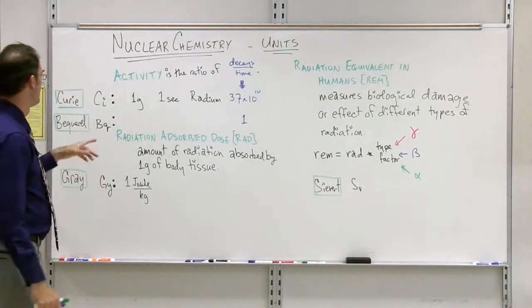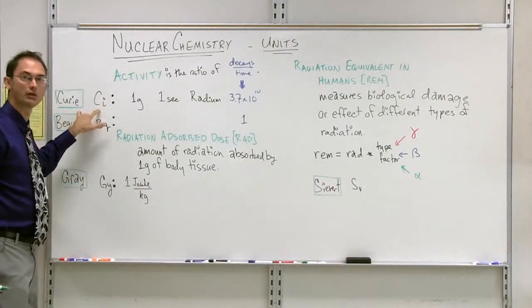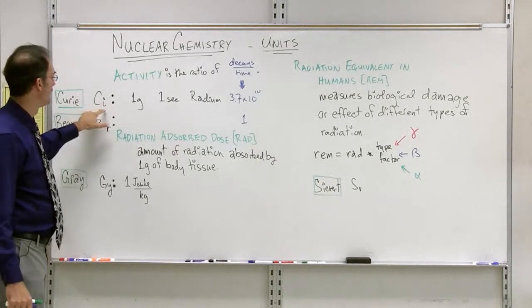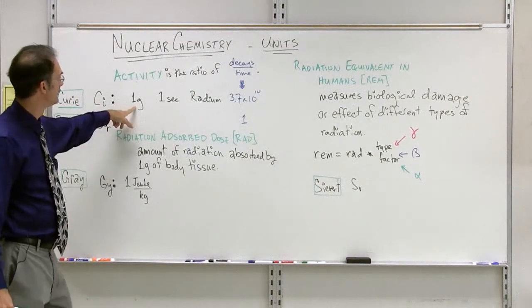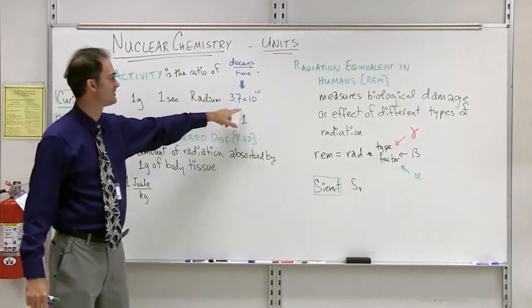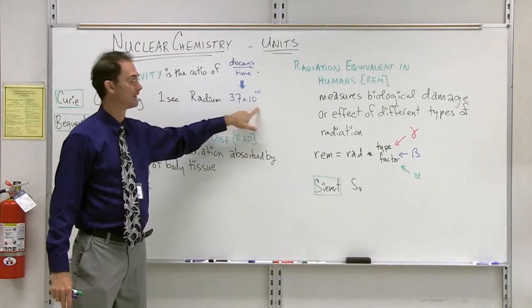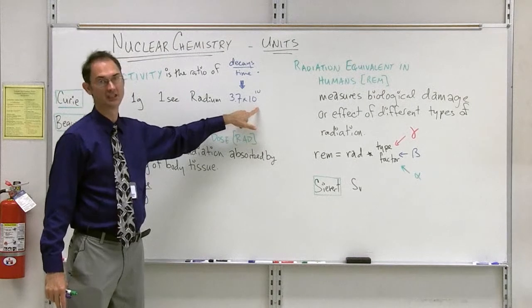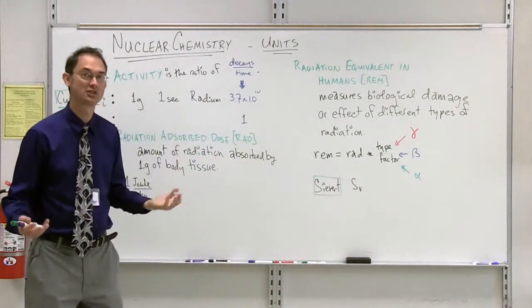And in this case, we have first of all the Curie, which historically, of course, comes from Marie Curie. And this is, if you have one gram and you wait one second of radium, you're going to get 3.7 times 10 to the 10th decays. That's about 37 billion decays. That's just a number. That's just what she measured.